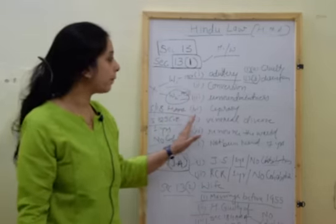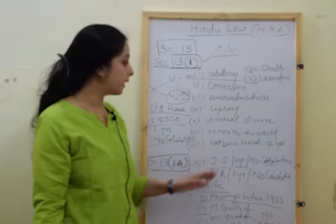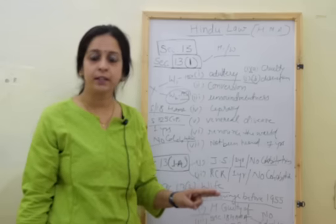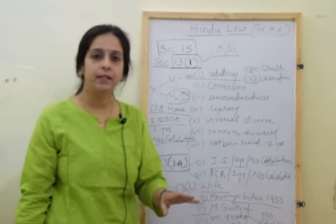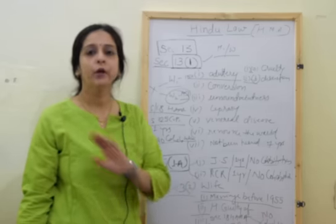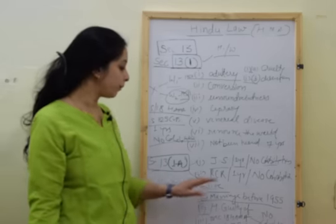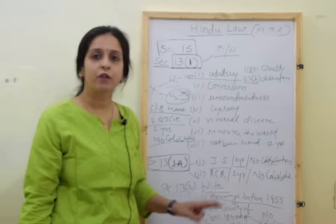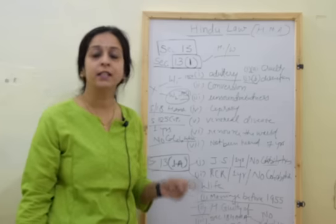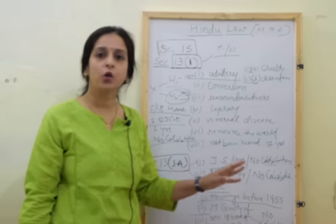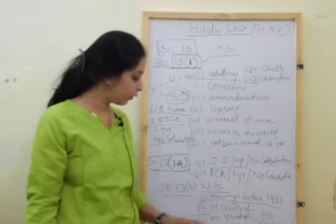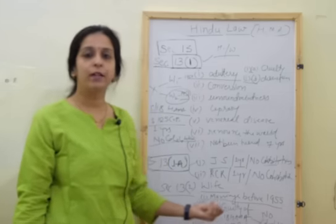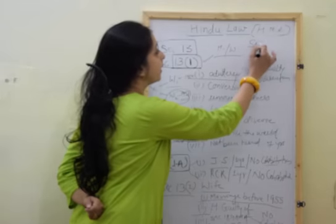Under Section 13(1), the grounds are adultery, cruelty, desertion, conversion, unsound mindedness, leprosy, venereal disease, renouncing the world, and not being heard from for the last seven years. Special grounds available to both parties under Section 13(1A): judicial separation decree passed by court with one year completed and no cohabitation; restitution of conjugal rights decree passed by court with one year completed and no cohabitation. Four specific grounds under Section 13(2) for wife only: marriage before 1955 with husband already married; husband guilty of certain offenses; Section 18 HAMA or Section 125 CrPC order with no cohabitation after one year; and marriage before age 15 with right to repudiate before 18. The second provision relating to divorce is under Section 13B.